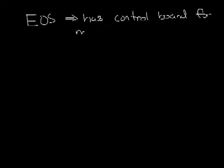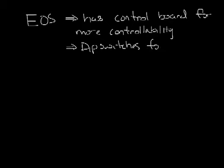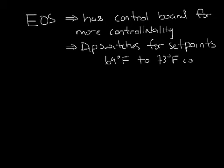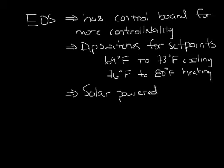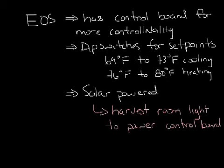Titus also makes an auto changeover slot diffuser that has more controllability called the EOS. The EOS has a small control board that allows you to use dip switches to set the heating and cooling set points. The set points can be set anywhere between 69 and 73 degrees for cooling and 76 to 80 degrees for heating. And one of the coolest things about the EOS is that it is solar powered. It actually harvests energy from the space lighting to provide the power for the control board. There's a great video that explains the EOS operation on our YouTube channel. I'll put a link down in the description below.